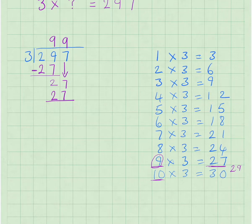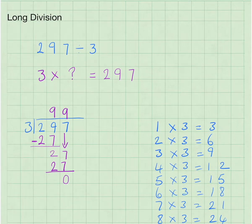So the answer to our question, 297 divided by 3 is 99, and then we can also say 3 times 99 equals 297.